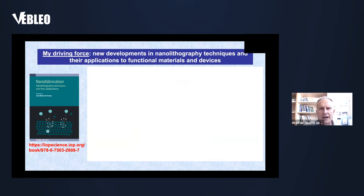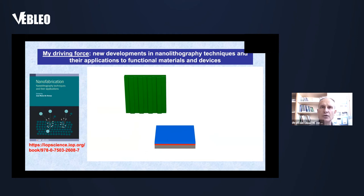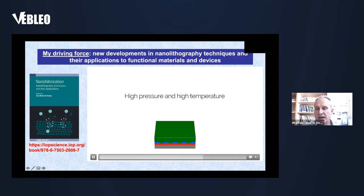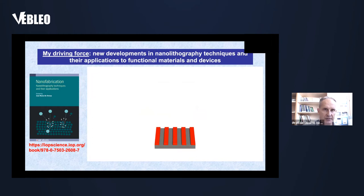The third technique is nano-imprint lithography, which is very useful because you can work in parallel using stamps with patterns that you transfer first to a resist, and from the resist to your sample. The stamp is put in contact using high pressure and high temperature to modify the shape of the resist, then an etching process transfers the pattern. This is a very nice way to get cheap nanopatterning with a stamp.